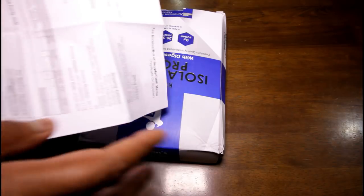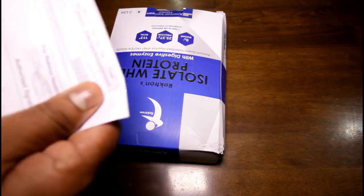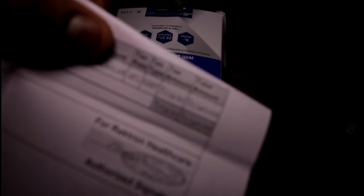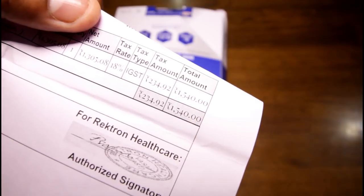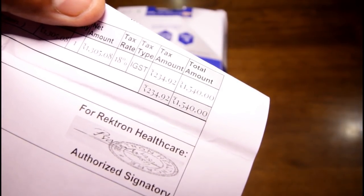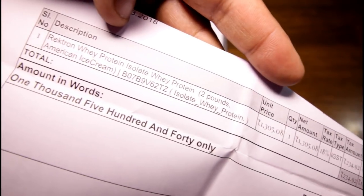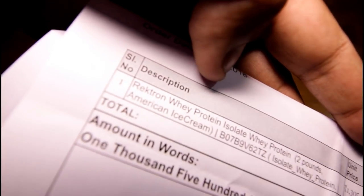And they've given a bill which is pretty cool and if you look at the price, we're talking about 1540 bucks. That's the cheapest for two pounds of whey protein. This comes with digestive enzymes and a flavor which is ice cream, American ice cream. Now that's the reason, some of the reasons why I bought this.